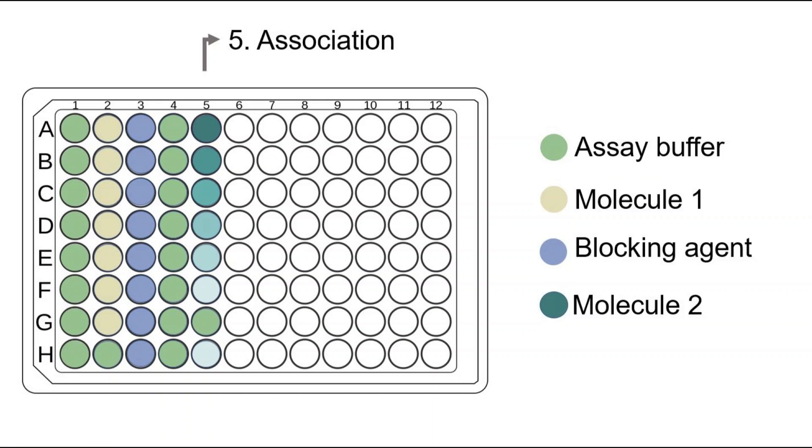In the association step, the second protein is added with two controls. One has only protein molecule 1 and no molecule 2, as shown in G5, and the second one has no molecule 1 but only molecule 2, as shown in H5.